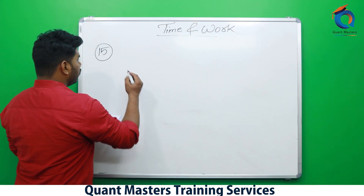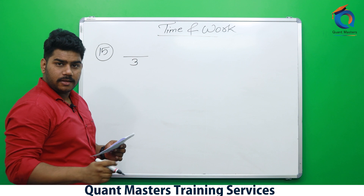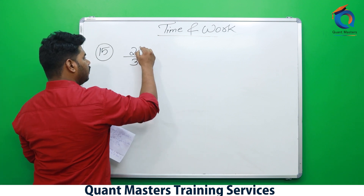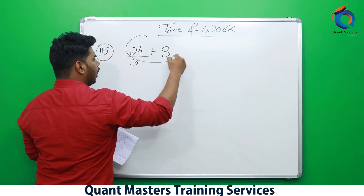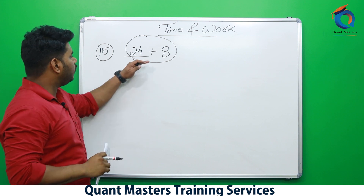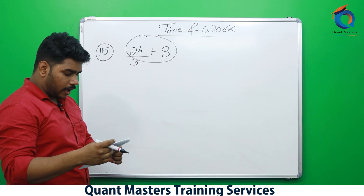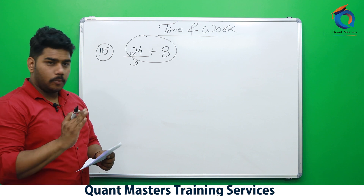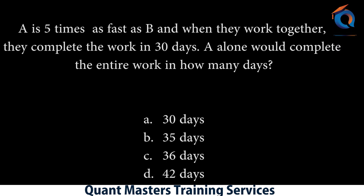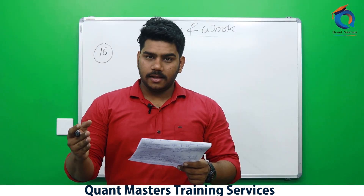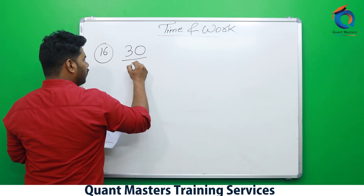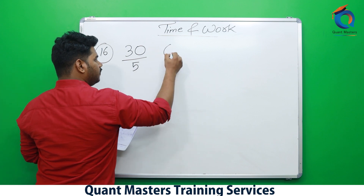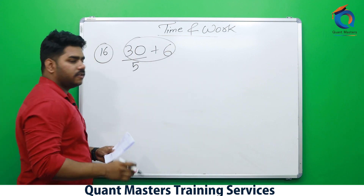More examples: A is thrice as good as B, together they complete work in 24 days. Divide 24 by 3 = 8. Answer: 24 + 8 = 32 days — that's option B. Next: A is 5 times faster than B, together they complete work in 30 days. Divide 30 by 5 = 6. Answer: 30 + 6 = 36 days.